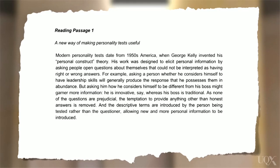Now let's try to find the information about personality tests. This is the first paragraph. Because this is question number one, you would expect to find the answer somewhere near the beginning of the text. The first thing we spot is one of our key phrases from the question — 'personality tests' — followed by the date, the 1950s. Next, we can see something about the type of question and the type of answers that these tests featured.